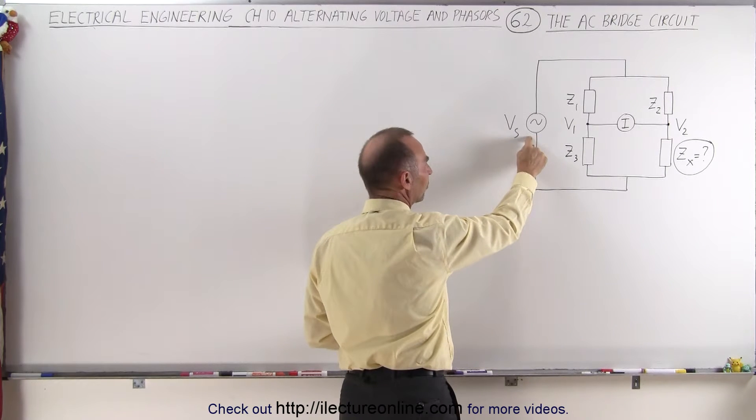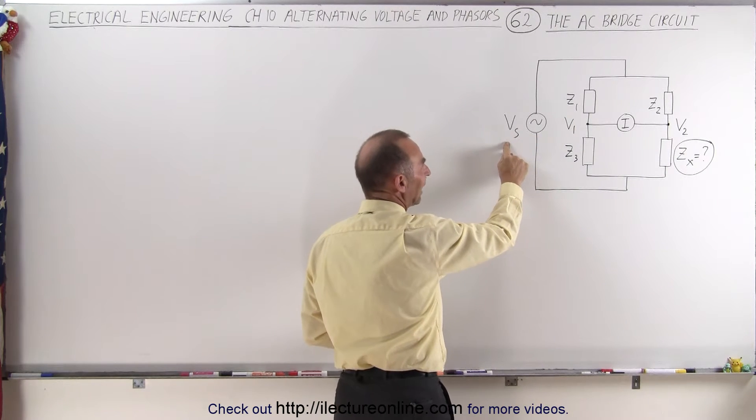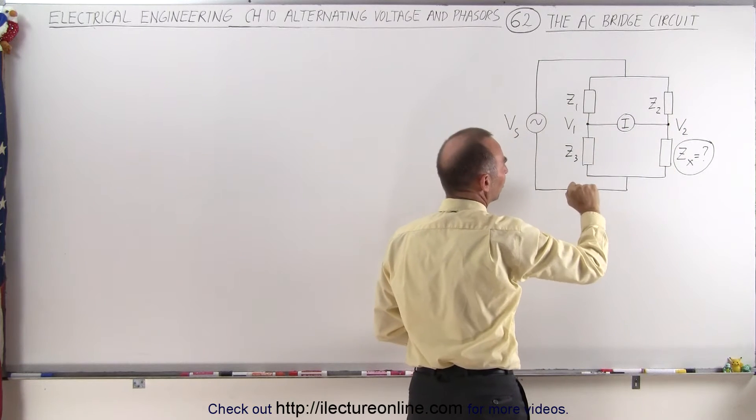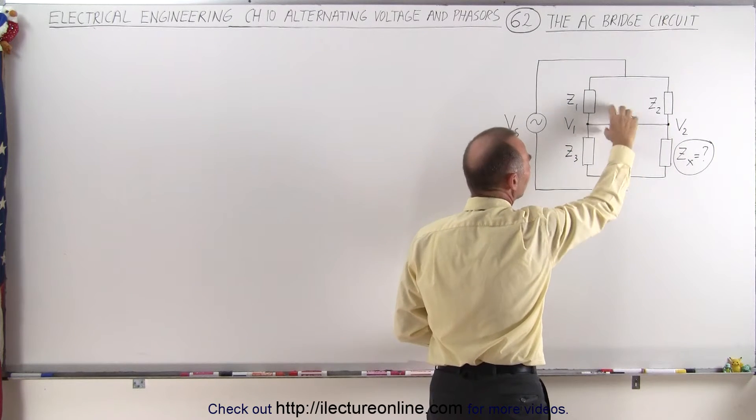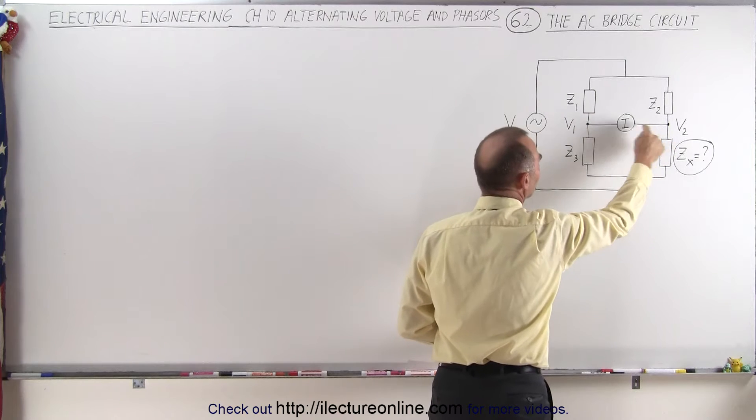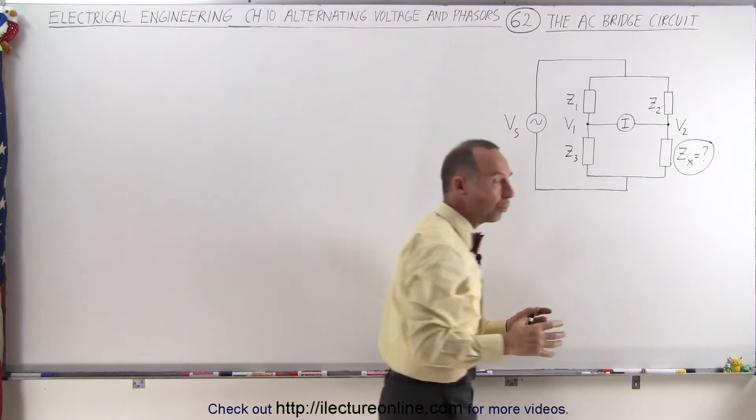We have a sinusoidal varying input voltage and our typical bridge circuit. Notice that the component between these two points here in the circuit is simply a current meter.